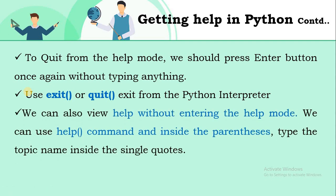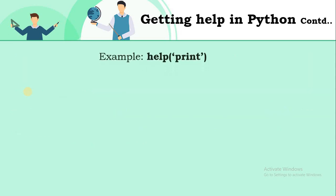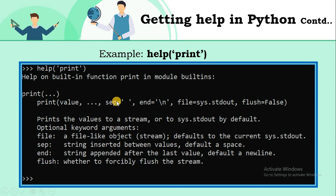There is a second method to use the help function. In the first method, the environment changes into help mode, but without changing into help mode, we can also use the help command. The syntax is: just type help(), open parenthesis, within single quotes, type any feature or topic of the Python language, and you will get complete information about it. These are the two ways to use help in Python.